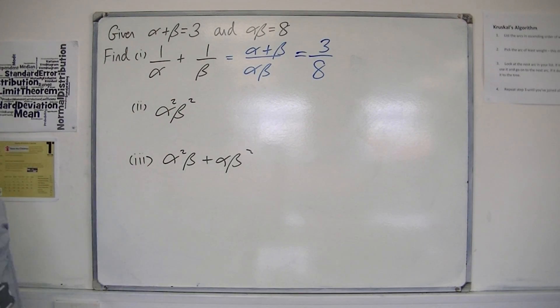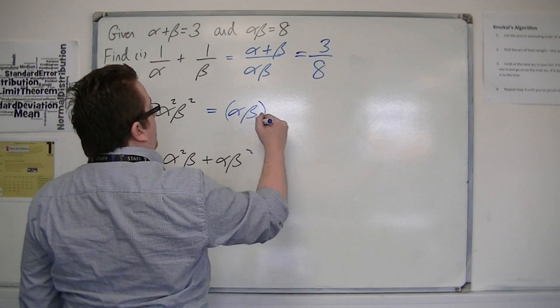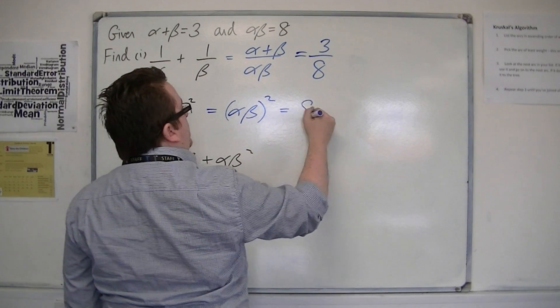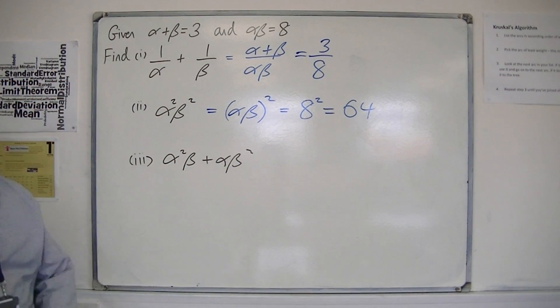If you wanted alpha squared beta squared, well that's alpha beta all squared. So that's 8 squared, which is 64. That would be the value of alpha squared beta squared.